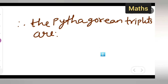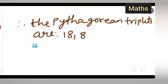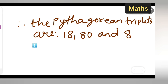Therefore, the Pythagorean triplets are 18, 80, and 82. I hope you all have understood how to write a Pythagorean triplet whose one member is 18. Thanks for watching.